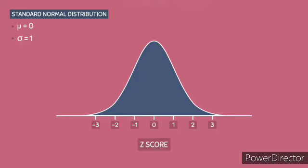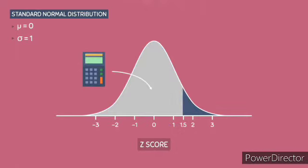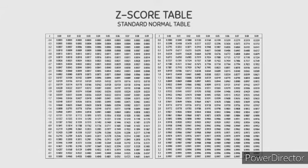Each number on the horizontal axis corresponds to a z-score. A z-score tells us how many standard deviations an observation is from the mean mu. For example, a z-score of negative 2 tells me that I am 2 standard deviations to the left of the mean, and a z-score of 1.5 tells me that I am 1.5 standard deviations to the right of the mean. Most importantly, a z-score allows us to calculate how much area is associated with it, using a z-score table, also known as the standard normal table.